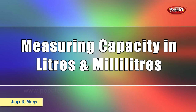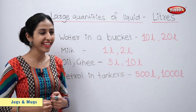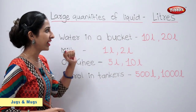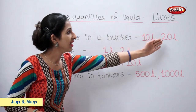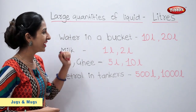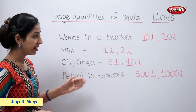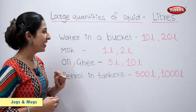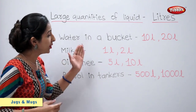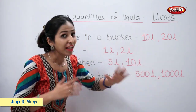Measuring capacity in litres and millilitres. Large quantities of liquid are measured in litres. For example, water in a bucket — 10 litres or 20 litres. Milk that we buy — 1 litre or 2 litres. Oil and ghee that we buy — 5 litres or 10 litres. Petrol in petrol tankers — 500 litres or 1000 litres.